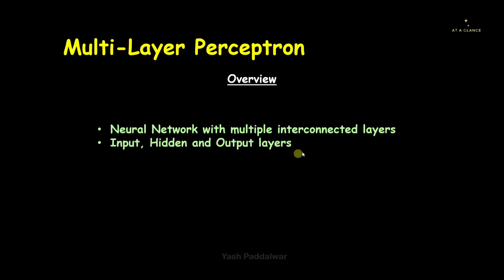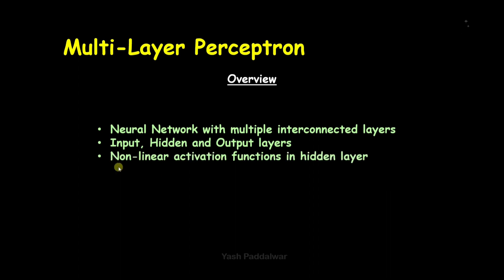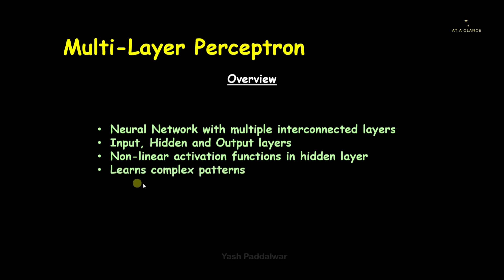It has input, hidden, and output layers — one single input layer, one single output layer, but there can be many hidden layers, and there can be many inputs as well as many outputs. Multi-layer perceptron uses a non-linear activation function in the hidden layer, which was not the case in perceptron, and that is why it can capture non-linear relationships between datasets.